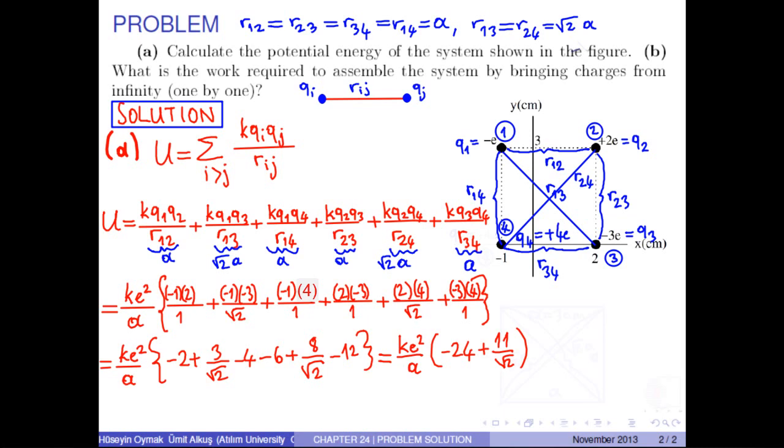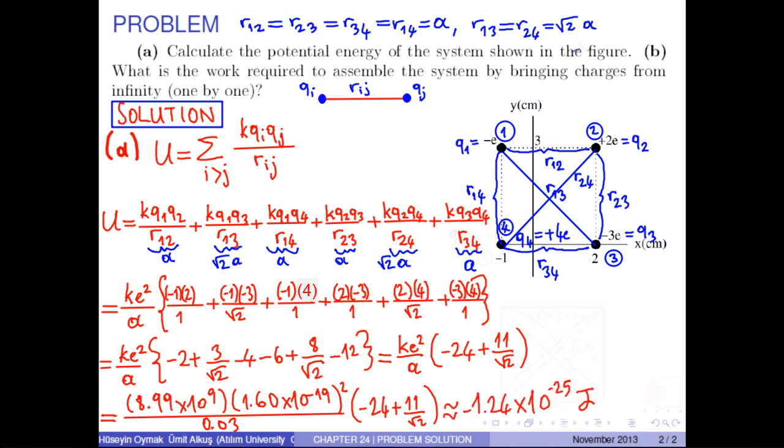Now, we can put the numerical values into this equation. As a result, we obtain the potential energy of the system as negative 1.24 times 10 to negative 25 joules.